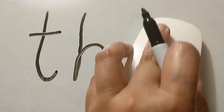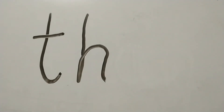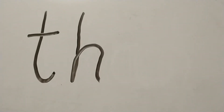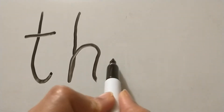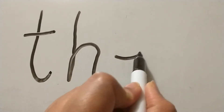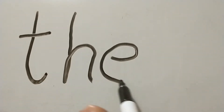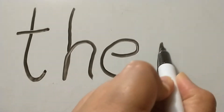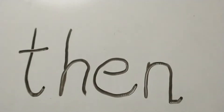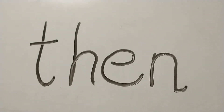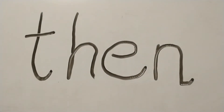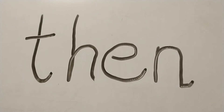We're going to keep the TH there, and then put two new letters after it to make TH-EN: THEN.